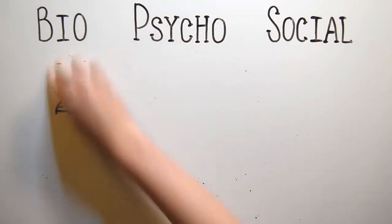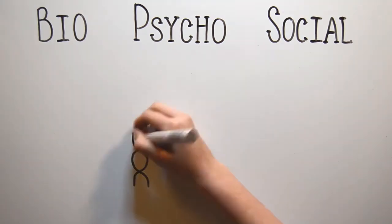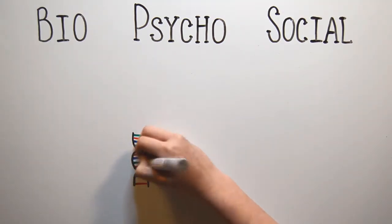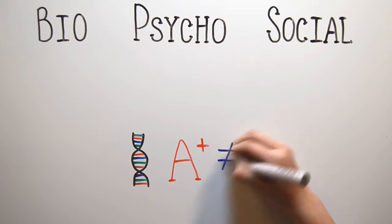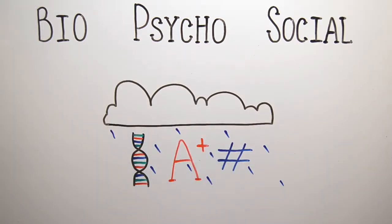It's important to remember that in someone who develops anorexia, a combination of these things is thought to have come together. Some people call it the perfect storm. It's also important to know that having these risk factors doesn't mean that someone will develop anorexia, but it does mean that the risk is increased for some people.